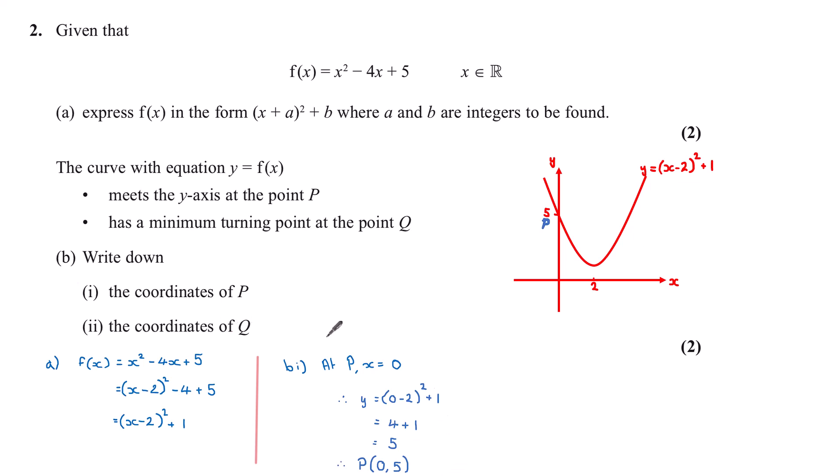And then part ii, to find the coordinates of Q, which are my turning point. As already stated, the turning point coordinates come from our completed square, where we take the opposite sign within the bracket here for x, and then the value on the outside for y. So Q is 2, 1.